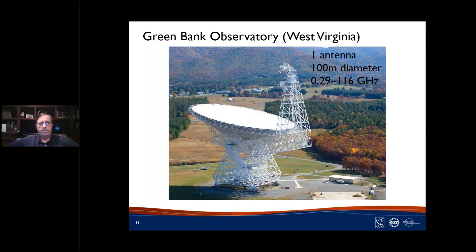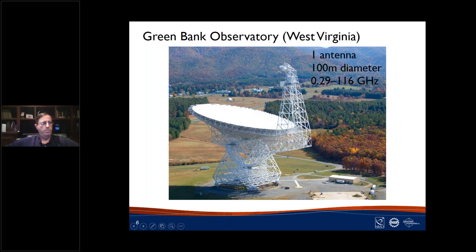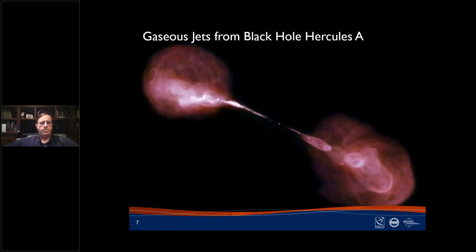The last main facility is the Green Bank Telescope in West Virginia. It operates as a single antenna and is a true monster — almost two football fields in collecting area, 100 meters in diameter — operating from 290 MHz to 116 GHz. There are actually several other antennas on the site, many in mothballs as they've been supplanted by superior telescopes, but some are still operating for various projects. The Green Bank Telescope is really the main astrophysical telescope on the site at the moment.